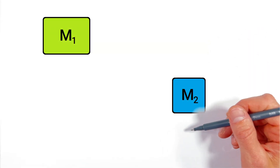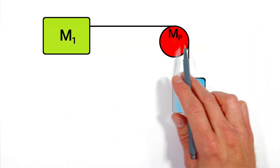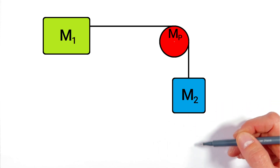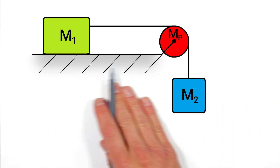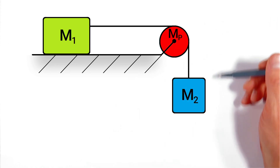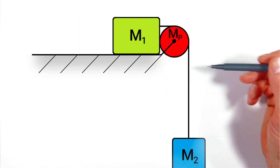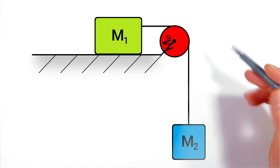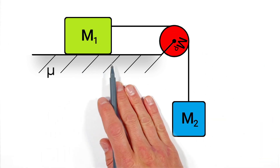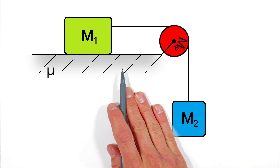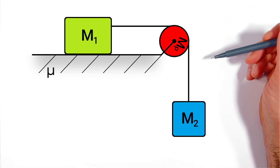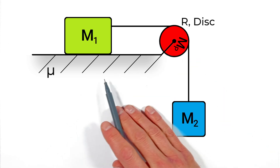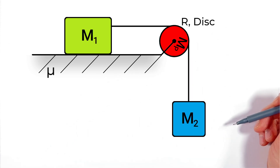Today we're taking a look at a system of two blocks connected by a string which runs up over a pulley. One of these blocks is hanging from the string and the other is sitting on a level surface. We'll solve for the acceleration of these two blocks when the system is released from rest. There's some coefficient of friction between the block and the horizontal surface, and this pulley has some mass and some radius.